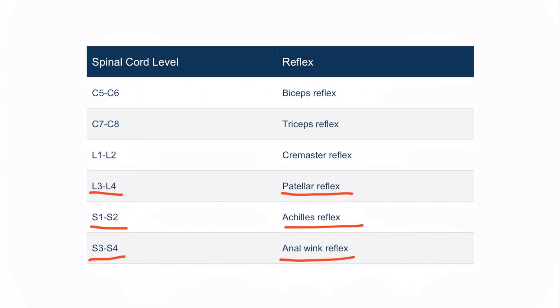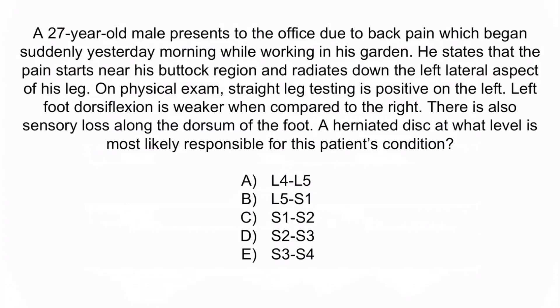Let's do a question so you can see how you'll be tested on this material. A 27-year-old male presents to the office due to back pain, which began suddenly yesterday morning while working in his garden. He states that the pain starts near his buttock region and radiates down the left lateral aspect of his leg. On physical exam, straight leg testing is positive on the left. Left dorsiflexion is weaker compared to the right. There is also sensory loss along the dorsum of the foot. A herniated disc at what level is most likely responsible? A: L4 to L5. B: L5 to S1. C: S1 to S2. D: S2 to S3. Or E: S3 to S4.